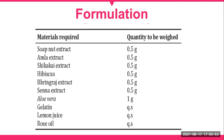We have a formulation example with different ingredients: soap nut extract, amla extract, shikakai extract, hibiscus, bhringraj extract, senna extract, aloe vera, gelatin, lemon juice, and rose oil. By using these materials, we can prepare a herbal shampoo. As per the type of ingredient, there are different pharmacological actions associated with each.